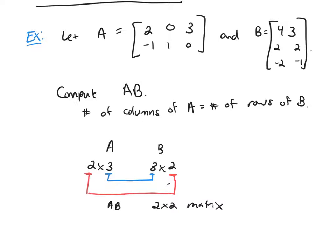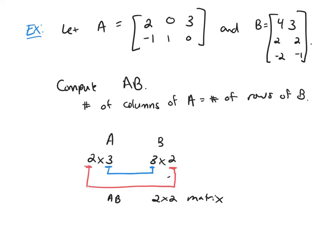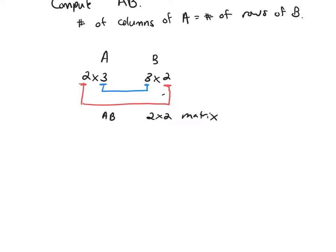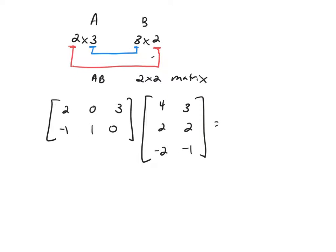So it's going to be a square matrix. So let's start multiplying these two. 2, 0, 3, negative 1, 1, 0. So that's the matrix A. Take the matrix B. And in the end, we said this is going to be a 2 by 2 matrix.